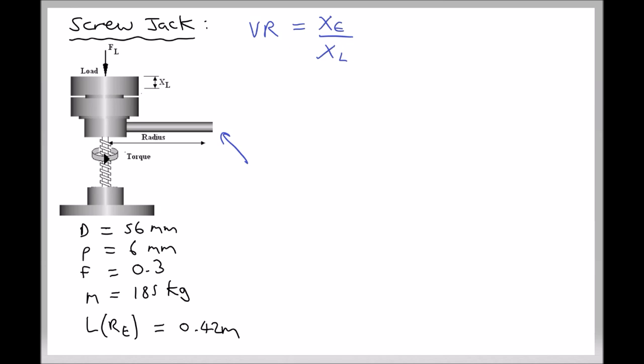The easiest way to think of this is that when the handle travels one full revolution, the load is going to be lifted through the pitch of the thread. The pitch of the thread is the distance between two threads. The distance moved by the handle in one full revolution is the circumference traced by the end of the handle, which is two pi times the length of the handle — since that length represents the radius. So the velocity ratio is two pi L divided by the pitch.